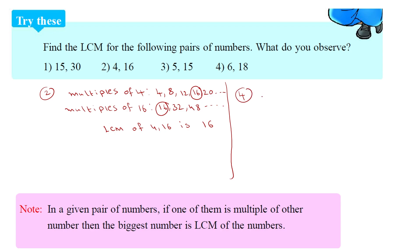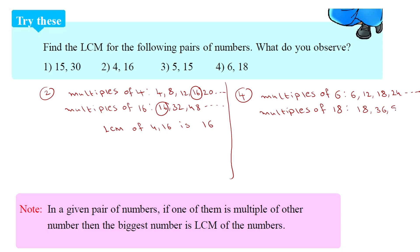Now for the pair 6 and 18. Multiples of 6 are 6, 12, 18, 24, and so on. Multiples of 18: the first common multiple is 18. So the LCM of 6 and 18 is 18.